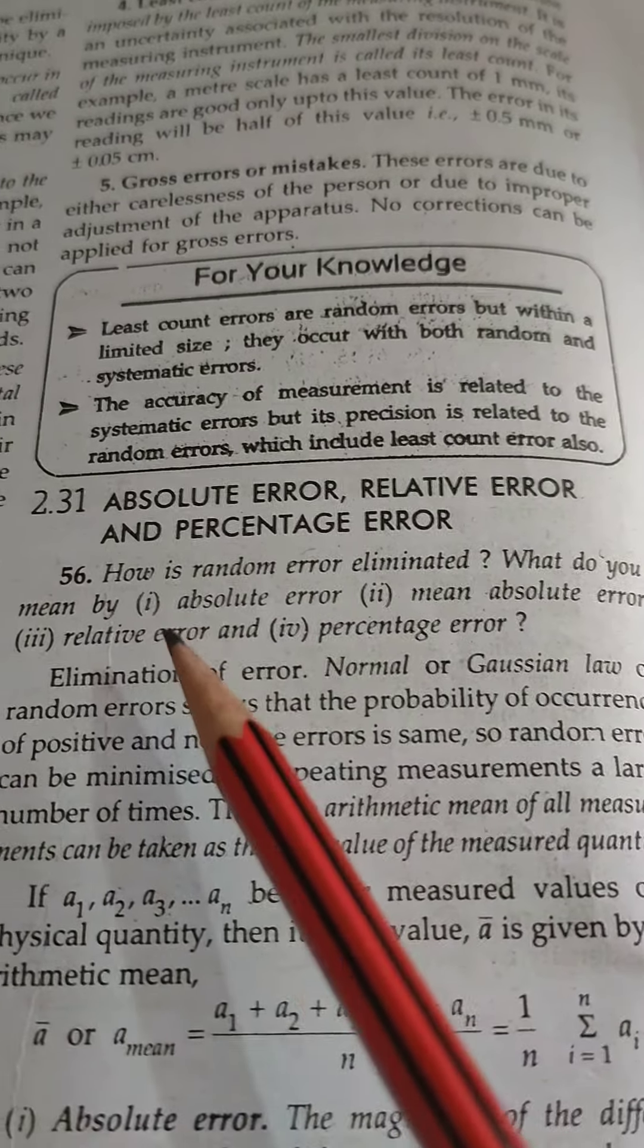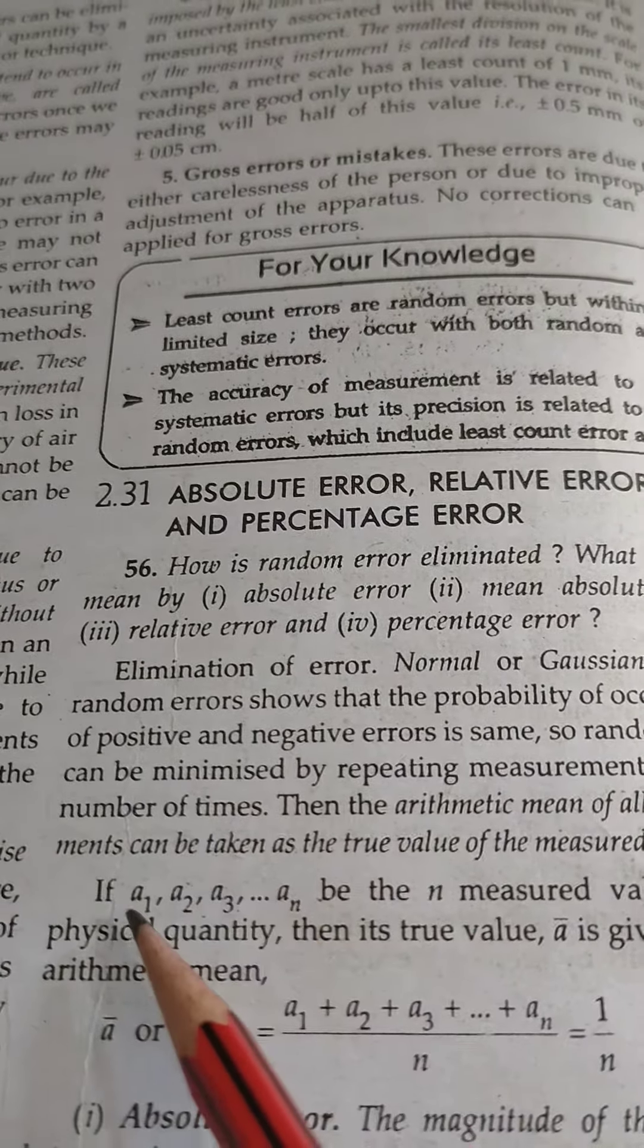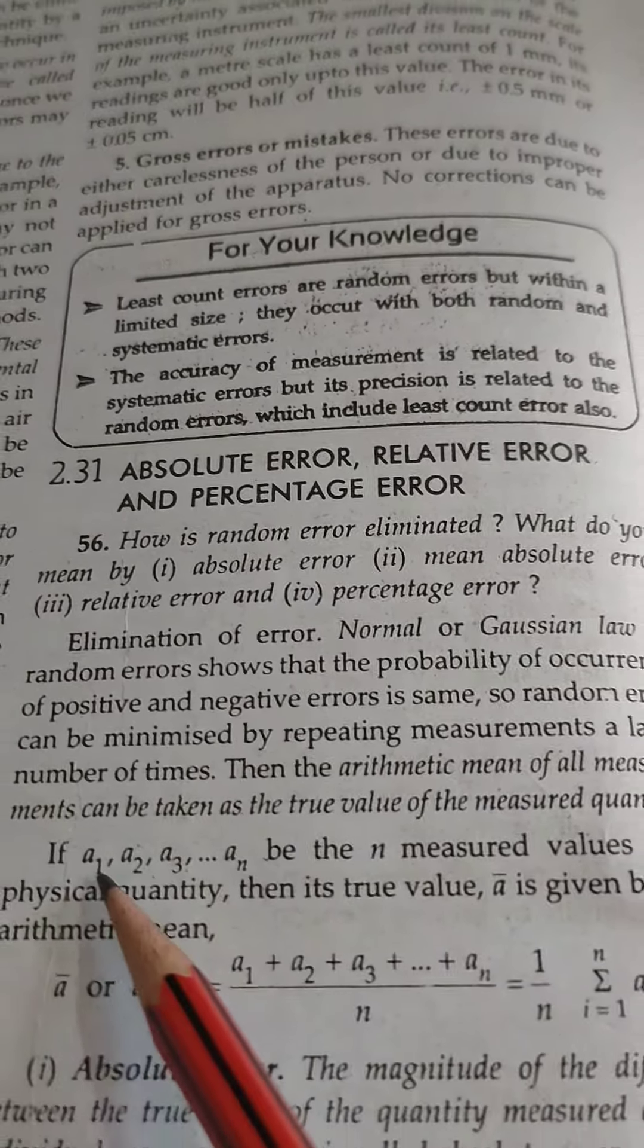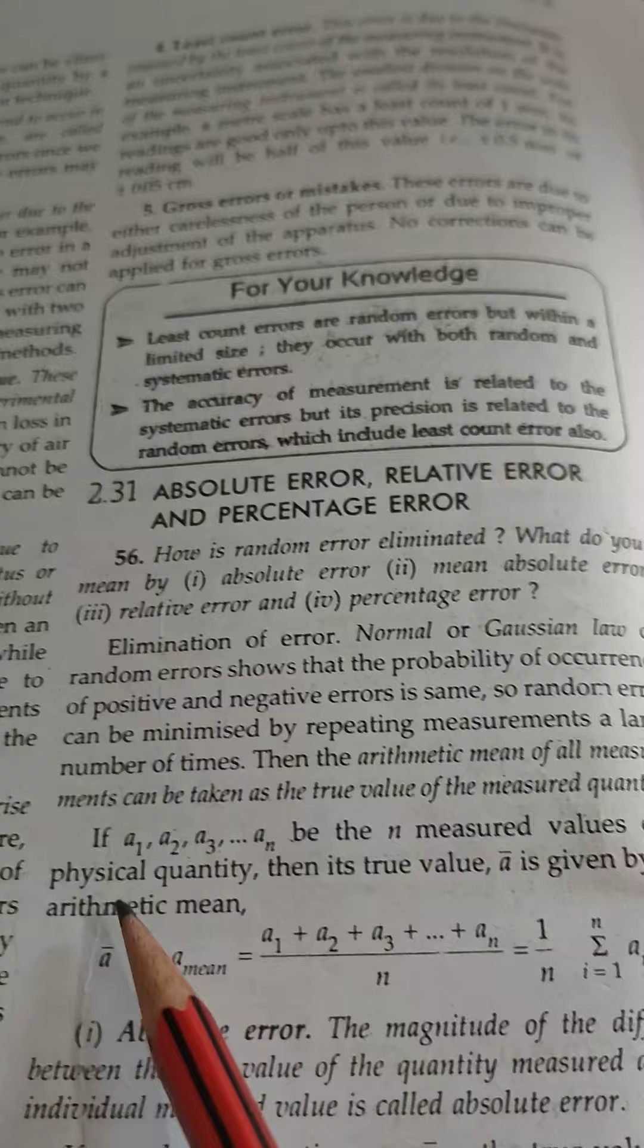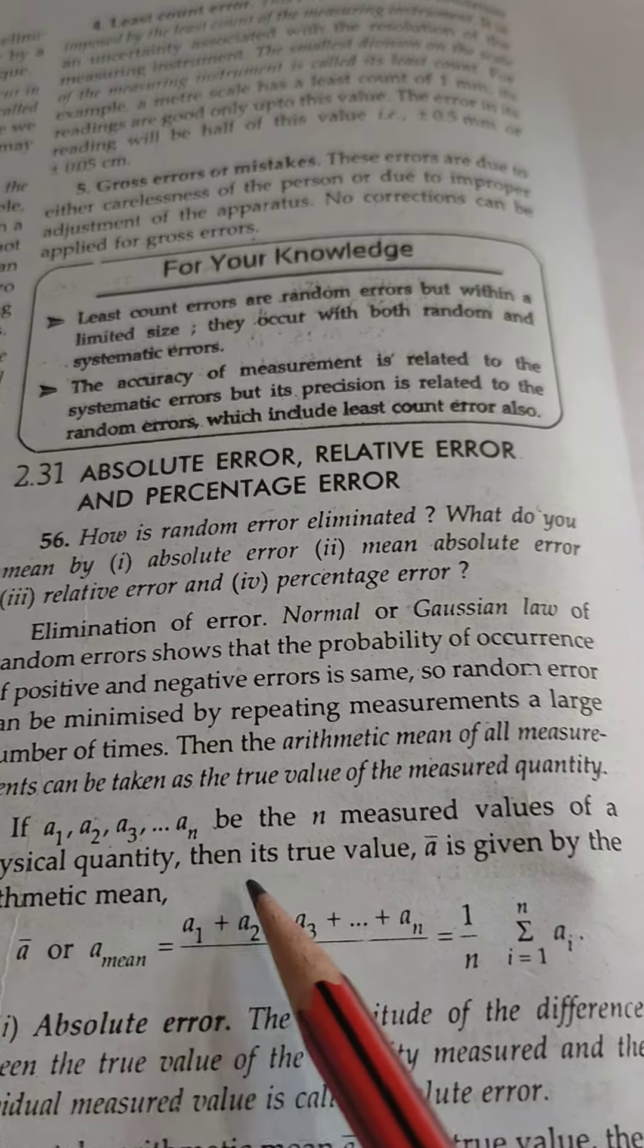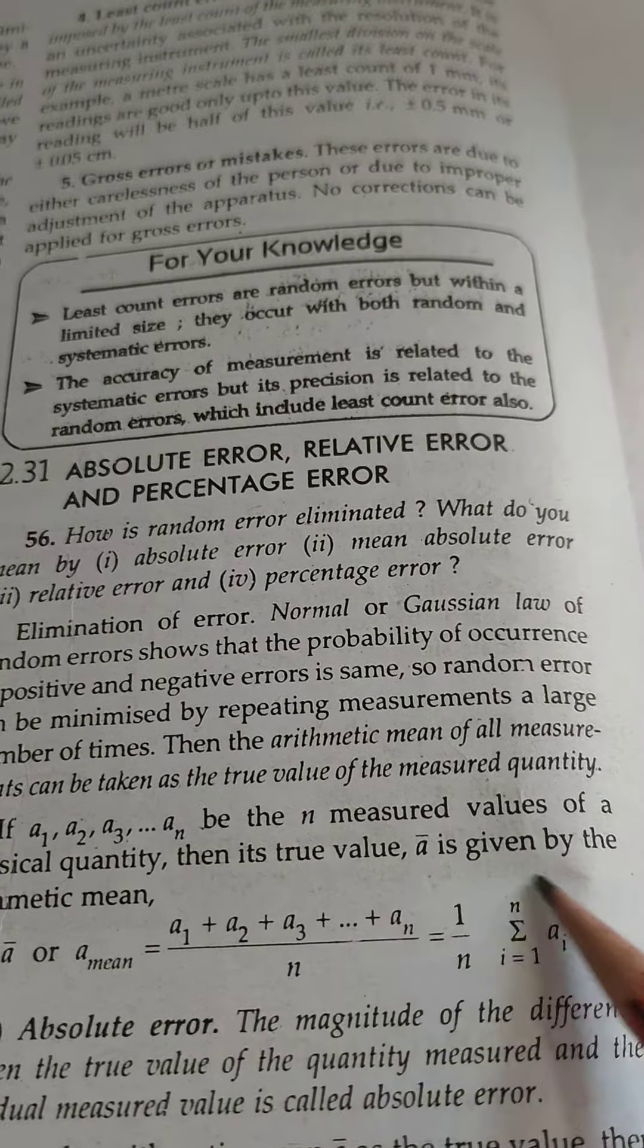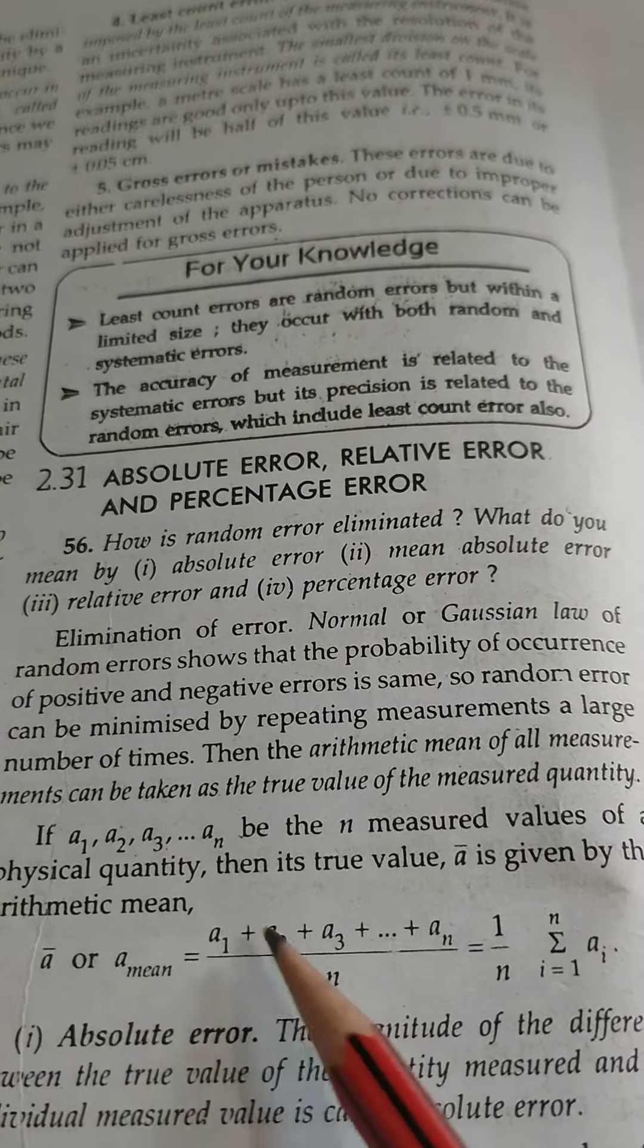First, if a1, a2, a3, up to an are the n measured values of a physical quantity, then its true value, a mean, is given by the arithmetic mean.